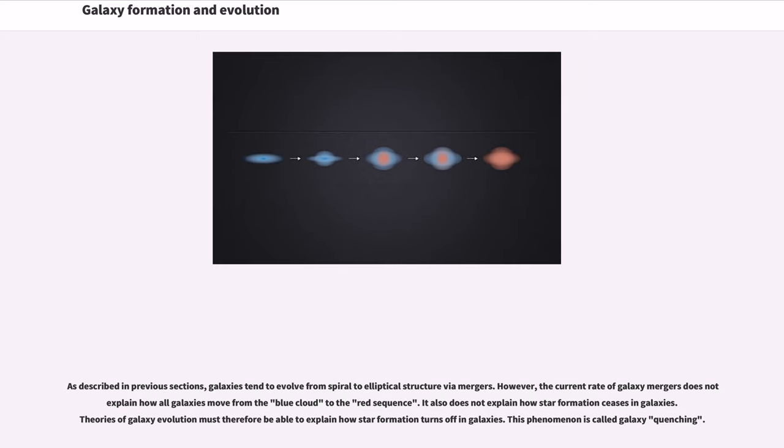However, the current rate of galaxy mergers does not explain how all galaxies move from the blue cloud to the red sequence. It also does not explain how star formation ceases in galaxies. Theories of galaxy evolution must therefore be able to explain how star formation turns off in galaxies. This phenomenon is called galaxy quenching.